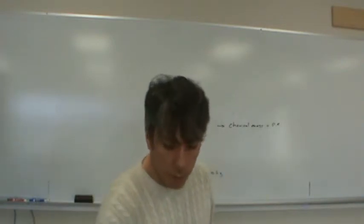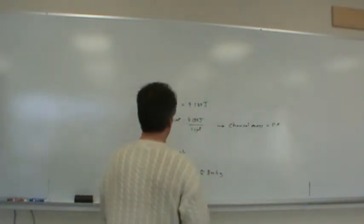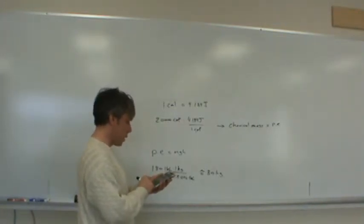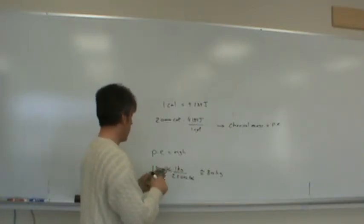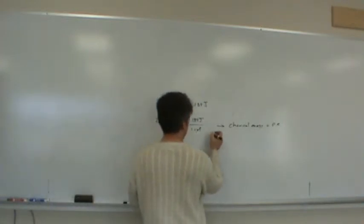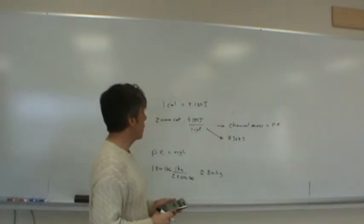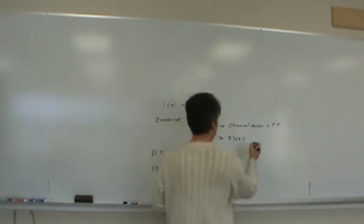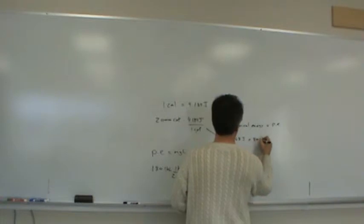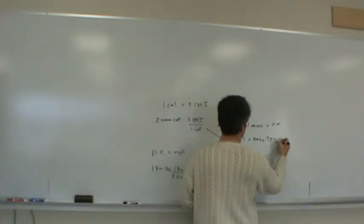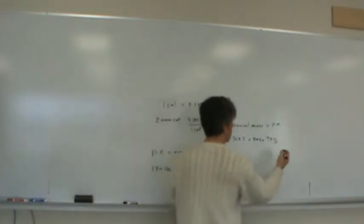So 2,000 times 4.184. I usually like to plug in numbers at the end and just work in symbols, but for the sake of this example, since I've started with numbers, I'll continue that way. So 4.184 times 2,000 looks like 8,368 joules or 8.37 kilojoules. And I need to set that equal to the mass, which is 80 kilograms, times acceleration of gravity 9.8 meters per second squared, times the height H, which is the unknown.